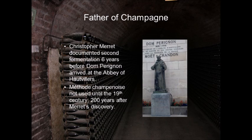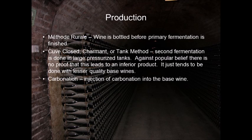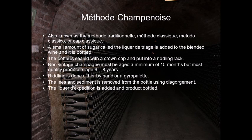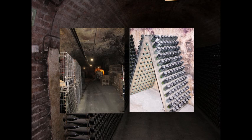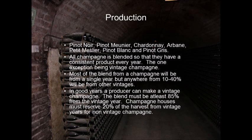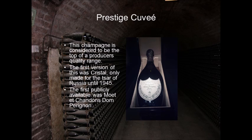DOCs and DOCGs of Tuscany: Brunello di Montalcino DOCG — local Sangiovese clones, must be 100% Sangiovese. Deep color, full body, firm tannins. Aged at least 4 years before release. Flavors of black fruits, chocolate, and leather. Rosso di Montalcino: a DOC aged for less time than Brunello and lighter in style.